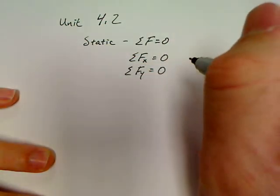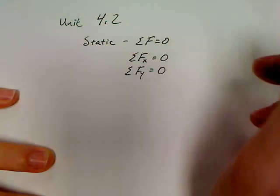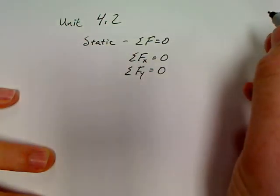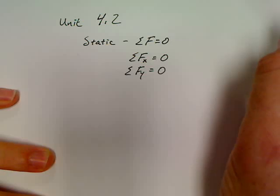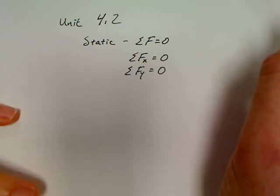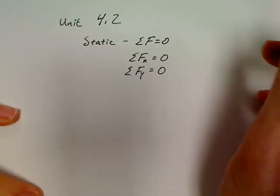Later on, we'll take a look at the second condition for static equilibrium, and that's when the sum of all the torques are equal to zero on an object. Anyway, easiest way to get into this one is just to go straight into doing some of the problems.